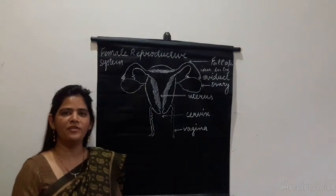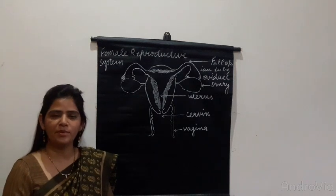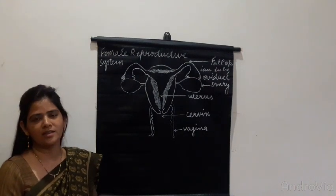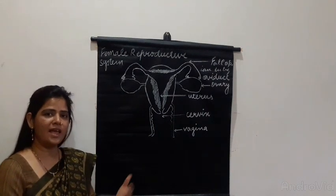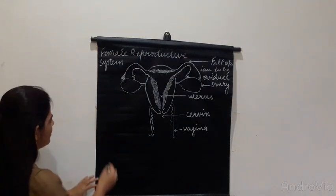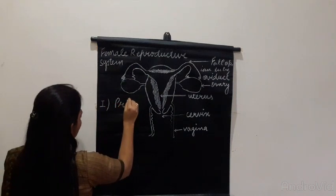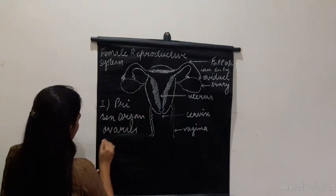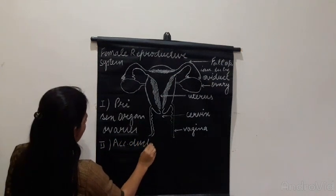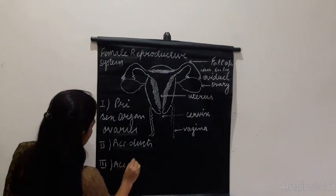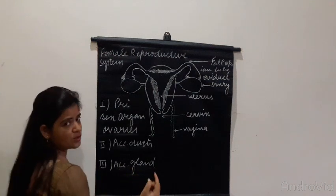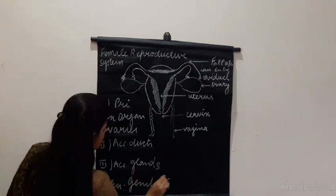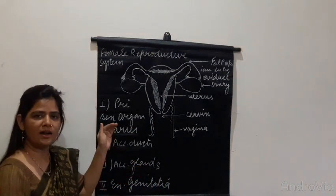In this part we will take up the female reproductive system. In the previous part we had discussed the male reproductive system — the primary sex organ, the accessory ducts, accessory glands, and the external genitalia. Here we will follow the same concept: first the primary sex organ, which are the ovaries, then accessory ducts, accessory glands — including mammary glands — and the external genitalia.